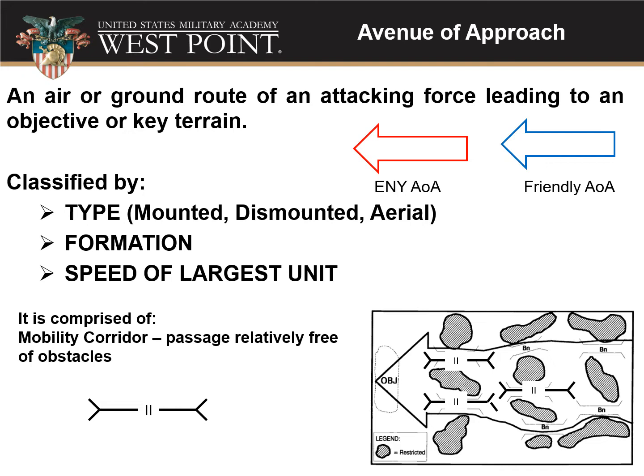Avenues of approach are composed of mobility corridors — passageways relatively free of obstacles. The symbol for a mobility corridor includes a unit size designator in the middle: two lines for battalion, three dots for platoon, a single line for company, or a single dot for squad. That part of the symbol tells you how large the corridor is and what size unit can move through it. A series of mobility corridors put together creates an avenue of approach for your total unit to reach the objective.